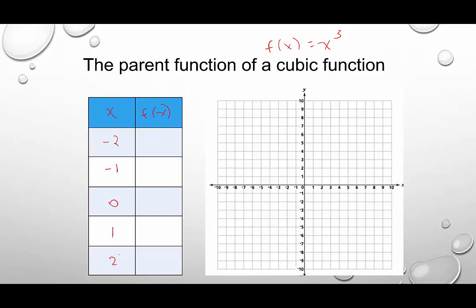So we're going to plug these into our function. That's going to be negative 2 cubed, which will be negative 8. Negative 1 cubed is negative 1. 0 cubed is 0. 1 cubed is 1, and 2 cubed is 8.